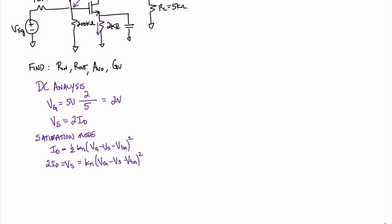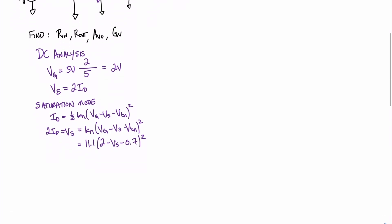Plugging in our known values for KN, Vg, and Vt, we get that VS equals 11.1 times (2 minus VS minus 0.7) quantity squared. We have a quadratic with one variable VS. After rearranging, we find two values for VS: 1 volt and 1.69 volts. Since the threshold voltage is 0.7 volts and the gate voltage is 2 volts, 2 volts minus 1.69 volts is less than the threshold voltage of 0.7 volts, so 1.69 volts would put us in cutoff. Therefore, the voltage at the source is 1 volt, the drain current is one-half of VS, so the drain current is 0.5 milliamps.